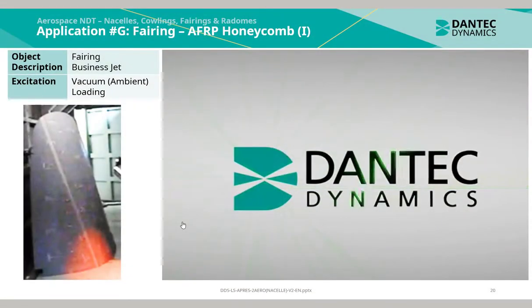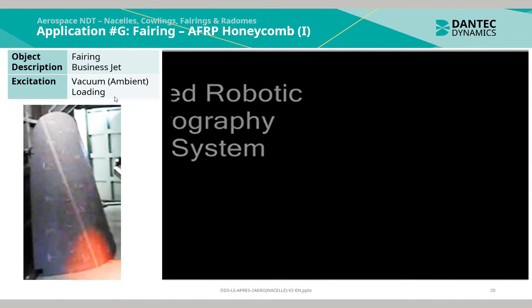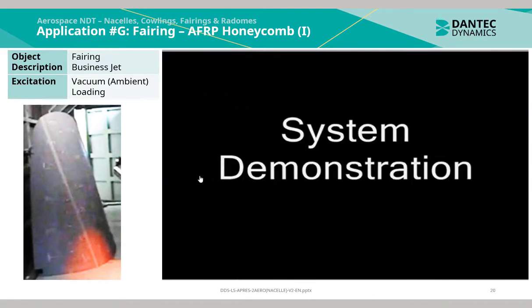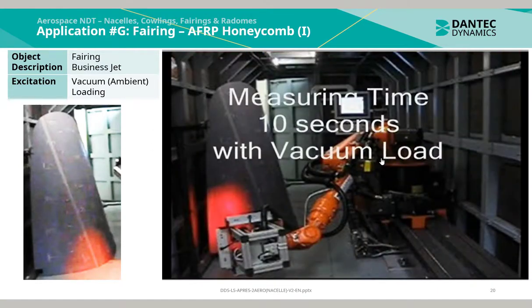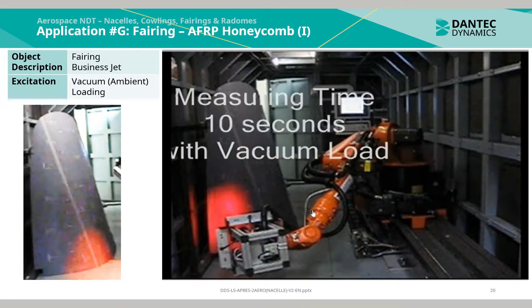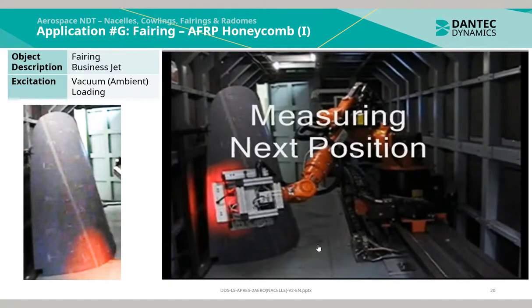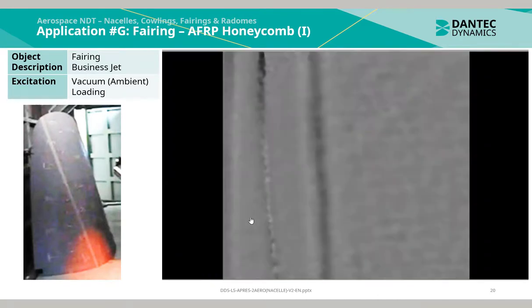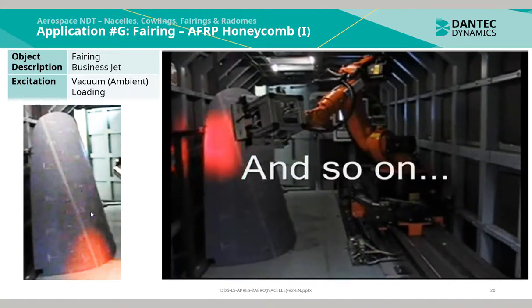The final application is a fairing of a business jet using vacuum ambient excitation. For this application, a robot was used that can apply both thermal excitation and vacuum ambient loading within a vacuum chamber. The measurement time per inspection was approximately 10 seconds, and the robot was fully programmable — it performed the application and measurement at every single step, then moved to the next location to complete the inspection of the entire fairing.